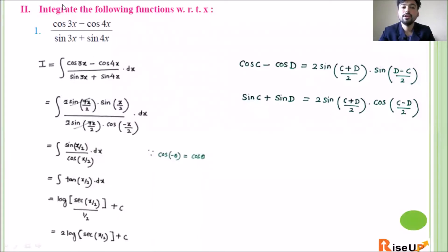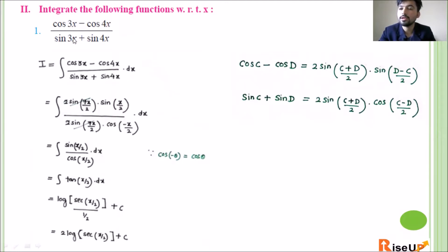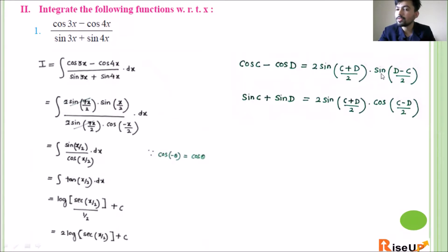Let us look at the first question: integrate the following function with respect to x. The question is (cos 3x minus cos 4x) upon (sin 3x plus sin 4x). To solve this type of question, we need to know our trigonometric formulas: cos C minus cos D equals 2 sin((C+D)/2) into sin((D-C)/2), and sin C plus sin D equals 2 sin((C+D)/2) into cos((C-D)/2).